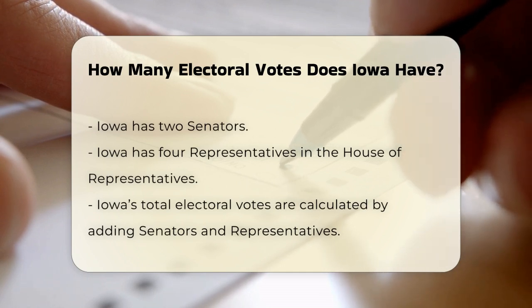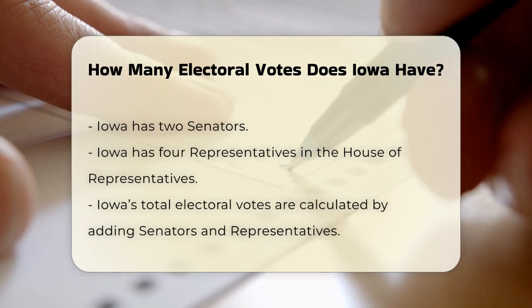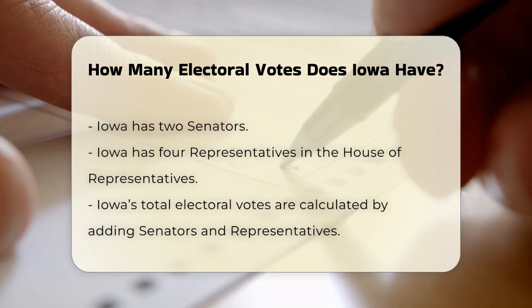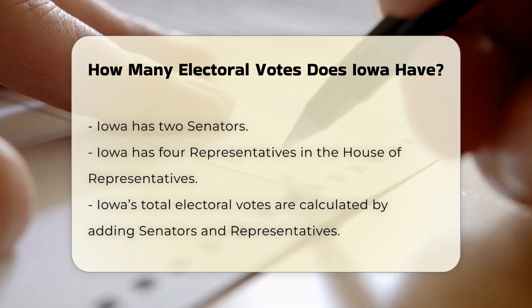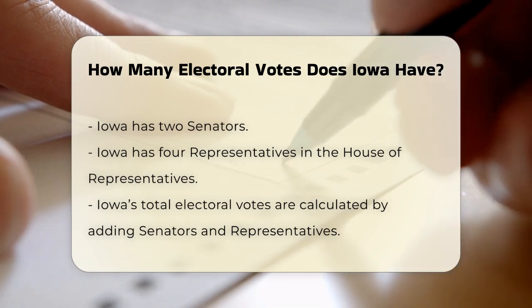Iowa's Congressional Delegation: Iowa, like other states, has two senators. In addition, it has four representatives in the House of Representatives, as determined by the population counts from the census.